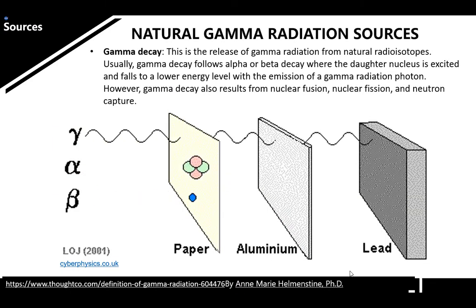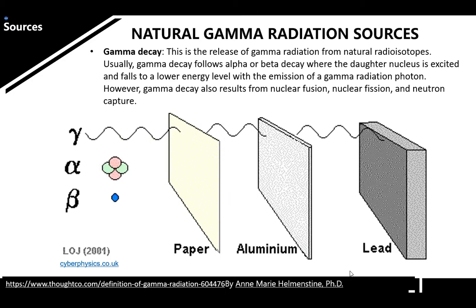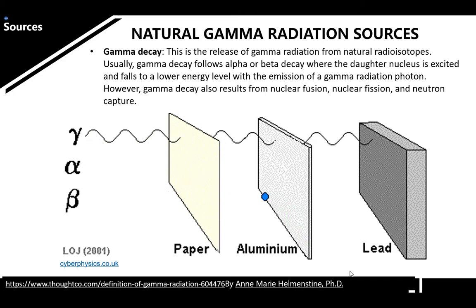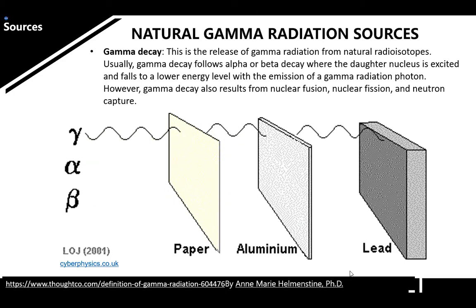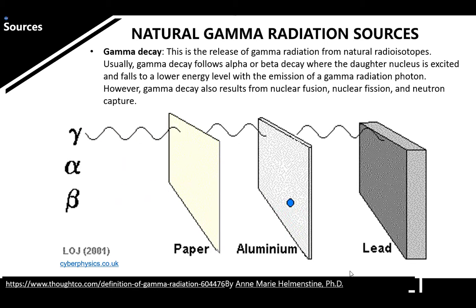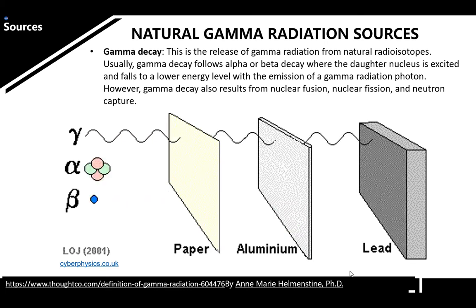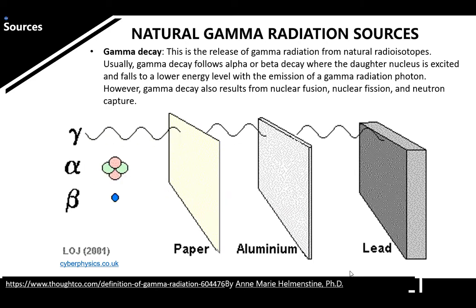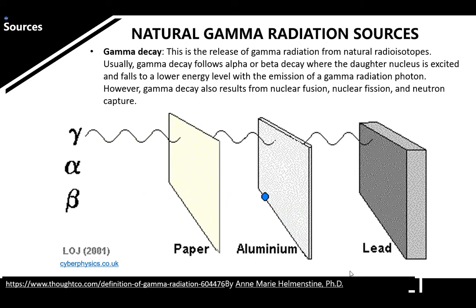In this illustration, gamma rays can penetrate paper and aluminum, while alpha rays can only penetrate paper, and beta rays can penetrate paper but cannot penetrate aluminum.